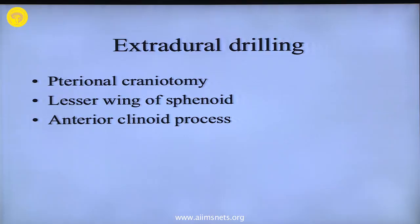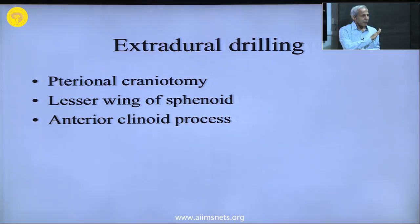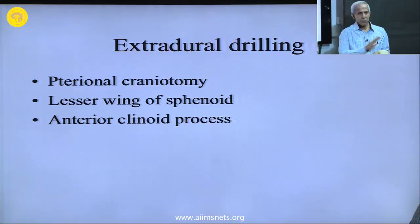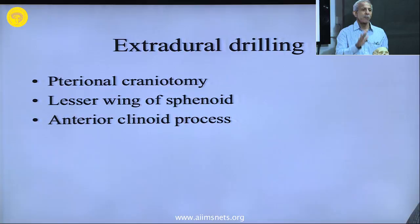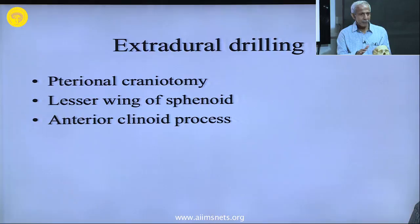The first step is pterional craniotomy, second is taking out the lesser wing of sphenoid, and the third is removing the anterior clinoid process. Ultimately, when you have practiced all the approaches, you come down to only three things: you must know how to do anterior clinoid drilling, how to do a good retrosigmoid exposure, and how to do a fronto-orbito-zygomatic. Practically you do not need to know any other skull base approach. Posterior petrosectomy, complete petrosectomy, extreme transcondylar — they are all overrated and not really required in more than 95% of cases.